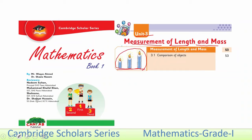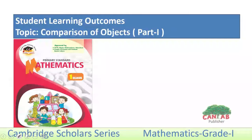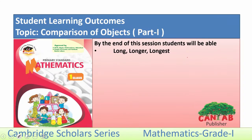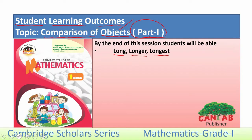Look at these three candles — what have you observed? Our first topic is 3.1 Comparison of Objects. Our today's topic is Comparison of Objects, Part 1. We will discuss only one SLO — Student Learning Outcomes — which is: Long, Longer, and Longest. We will observe different objects, check their lengths, and see which object is long, which is longer, and which is longest.